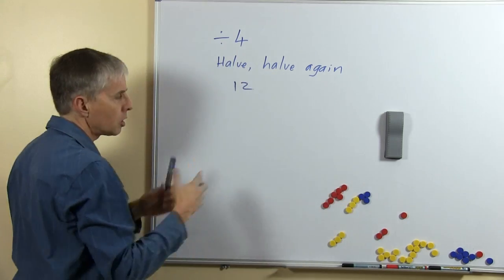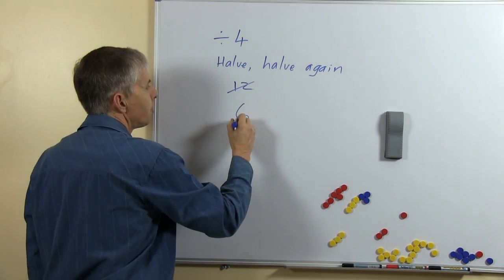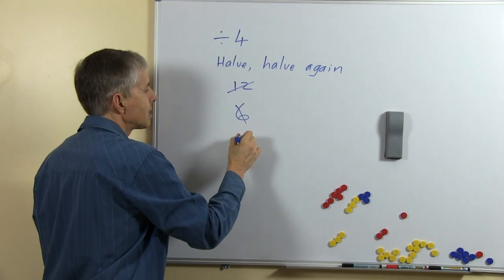Now you could quickly do questions like this with students by simply writing down, here's 12, what's half of 12 everyone? 6. What's half of 6? That's 3.